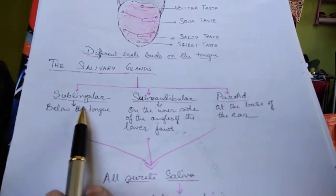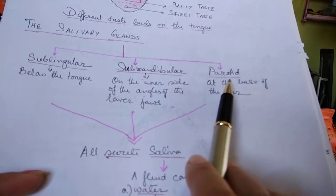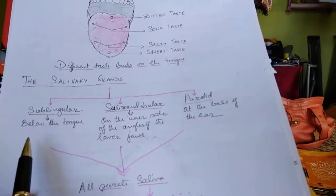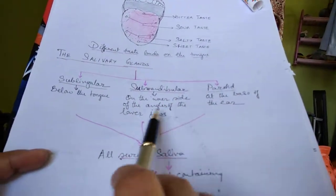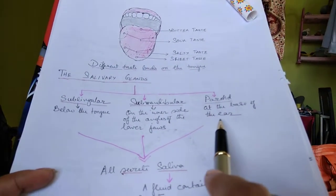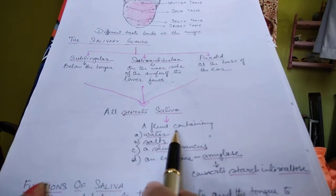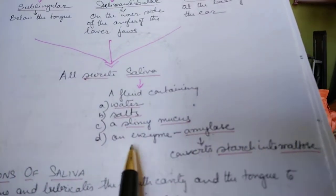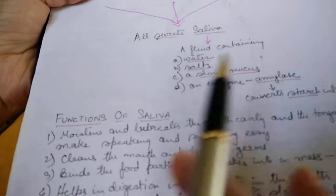There are three types of salivary glands: sublingual, submandibular, and parotid glands. The sublingual glands are found below the tongue, the submandibular glands are on the inner side of the angles of the lower jaw, and the parotid glands are at the base of the ear. They all secrete saliva.